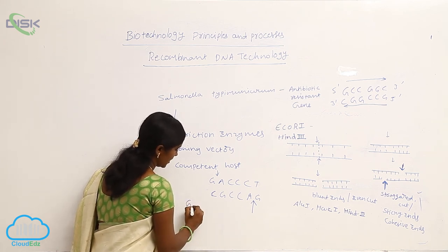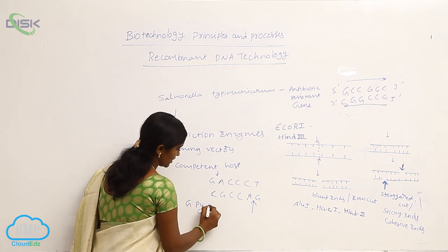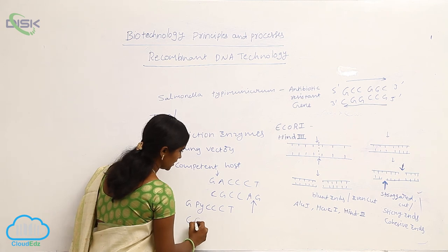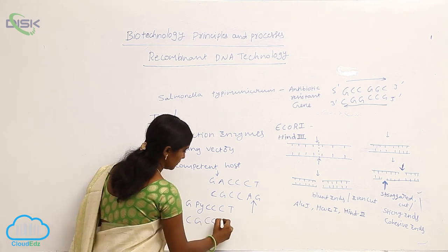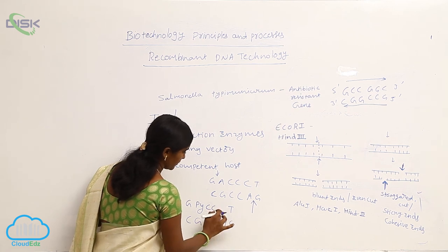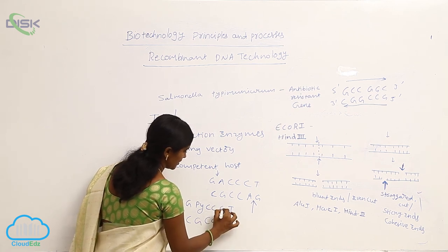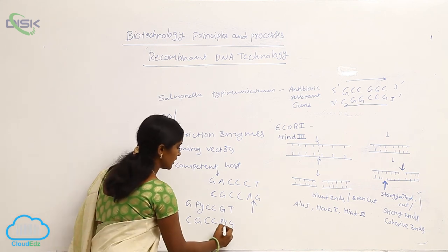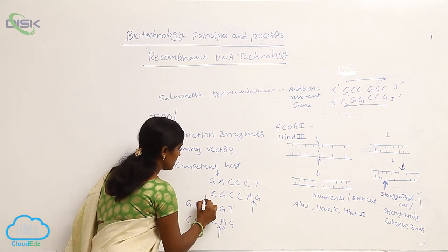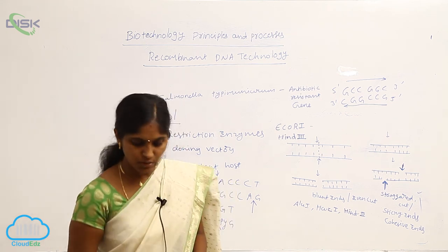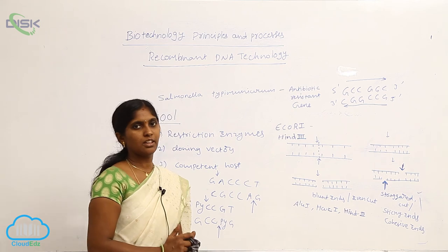So like this, at different stages restriction enzymes show their cutting activity. They are used in RDNA technology.